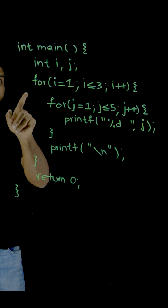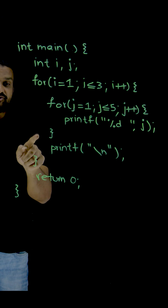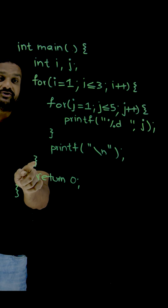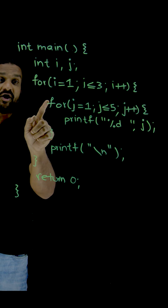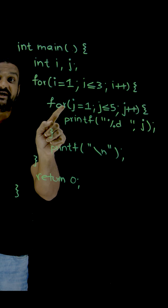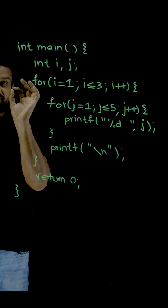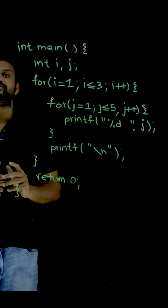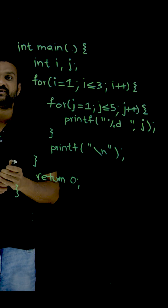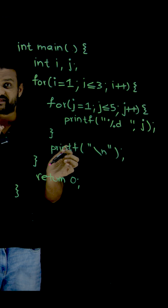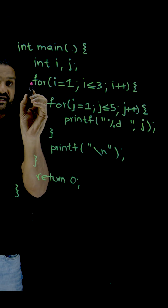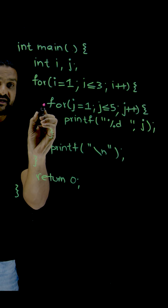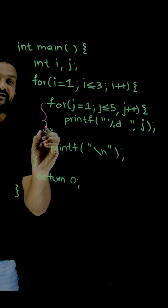Every time the outer loop gets executed, all the iterations of the inner loop are done. This point is very important to understand. Every time we come into the outer loop, the complete inner loop will get executed.